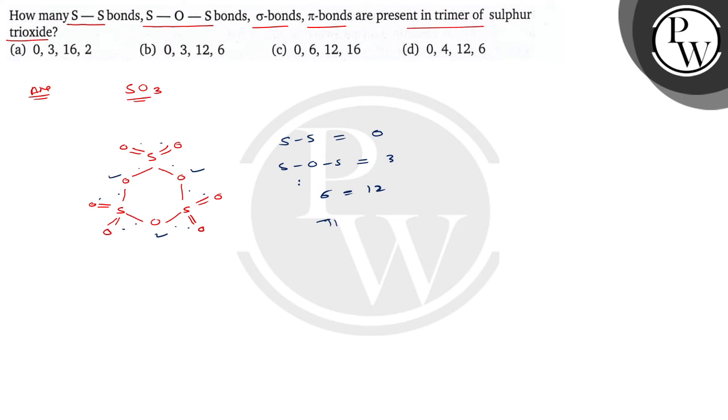And for pi bonds, if you calculate, it is 1, 2, 3, 4, 5, and 6. So 6 pi bonds.